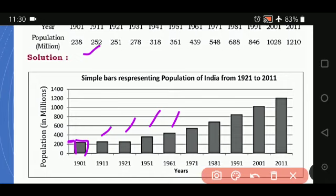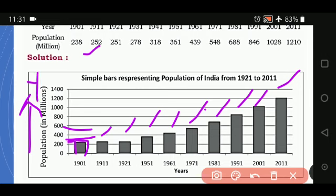Then next one is 361, 439, 548, 688. Then 2001 is 1028. And the last one is 1210. This is the highest value which it is taking. Simple bar diagram is nothing but this is your y-axis where you represent the population. And to the x-axis, you are representing the years. We will see one more example.